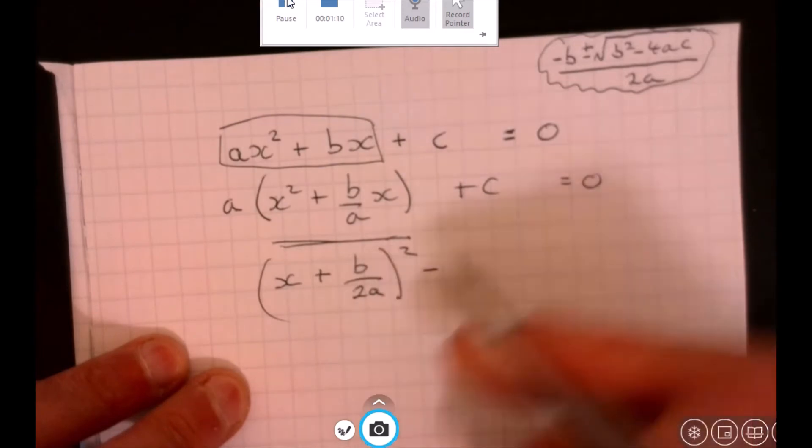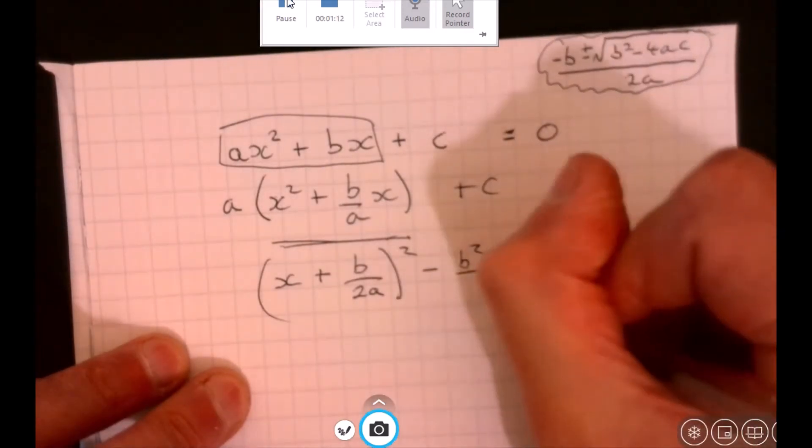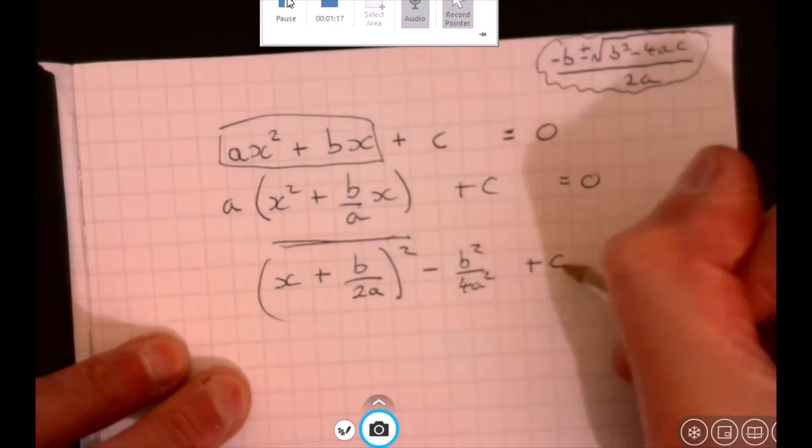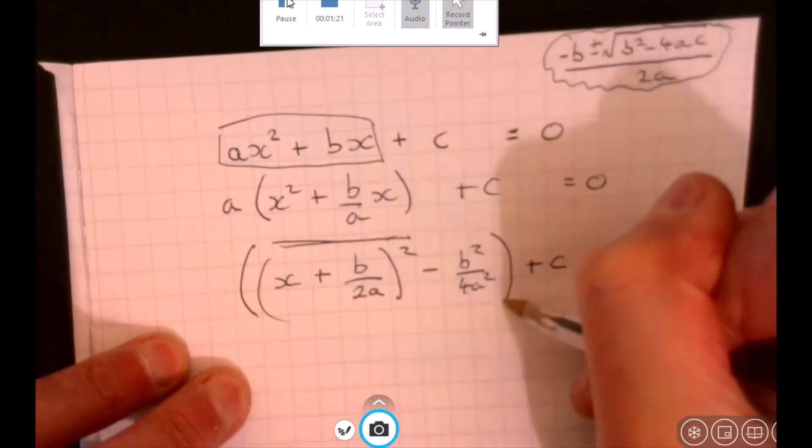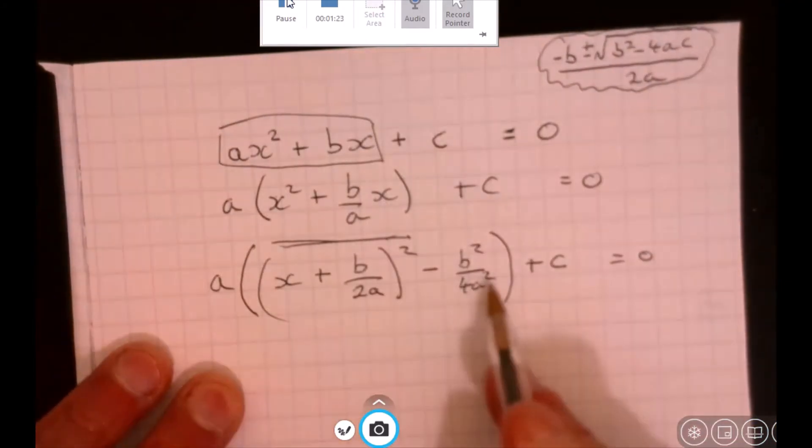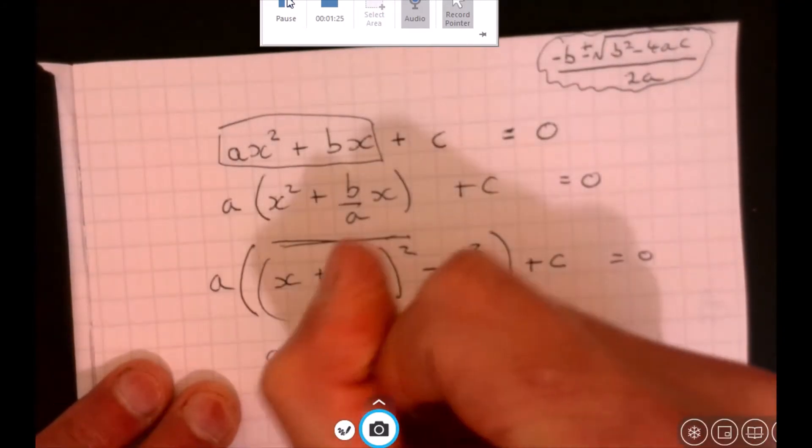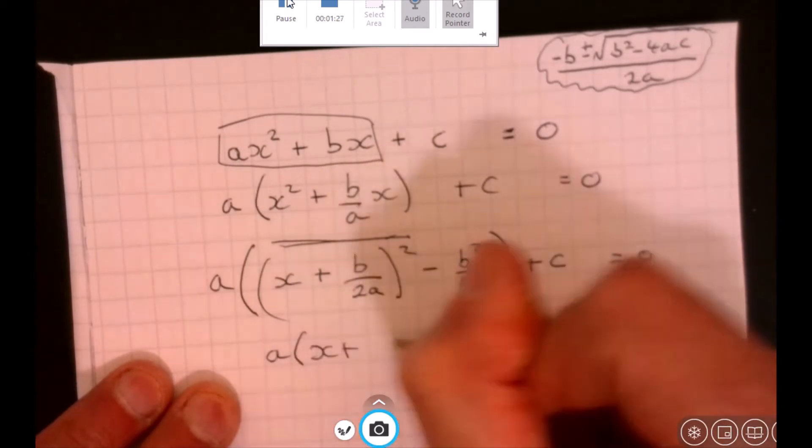So that's going to be this bit here squared, so we're going to have b squared minus 4a squared. Don't forget we've still got a plus c there equals zero. And then this lot is got to be multiplied by a. Multiply out by a, what do we get?